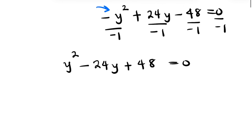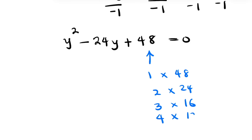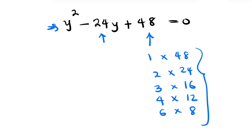We can now use the quadratic formula to solve for y, but first we check if this is factorizable. The factors of 48 are: 1 and 48, 2 and 24, 3 and 16, 4 and 12, and 6 and 8. We need a combination of these factors that when added together gives us 24. Looking at what we have, none of them add up to 24, so we are going to apply the quadratic formula.